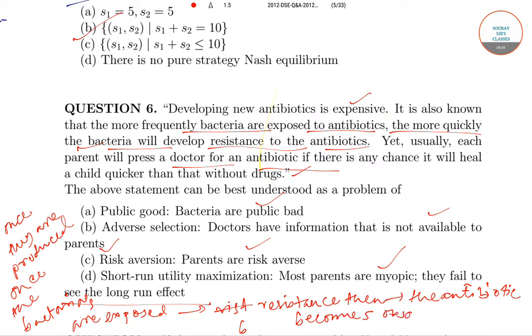The second case is that the doctors have more information than the parents. Obviously, the doctors have better understanding of medicine, which is known as the adverse selection problem. The risk aversion - the parents are of course risk averse because they do care about their children. And the short-term utility maximization - most parents are myopic. That is, they only see the short-run benefit, not the long-run.